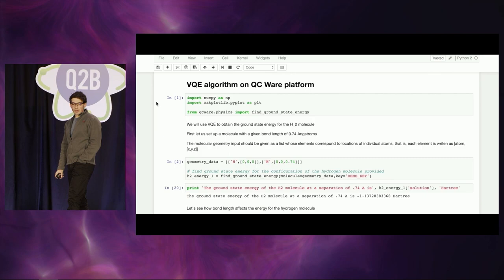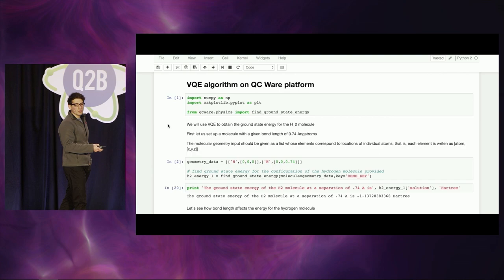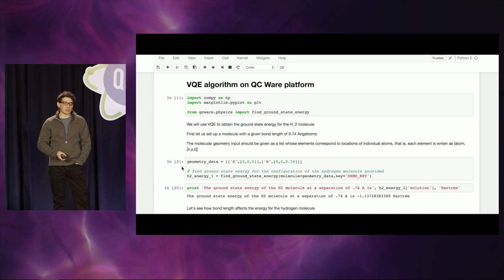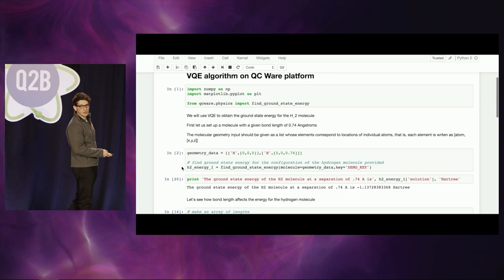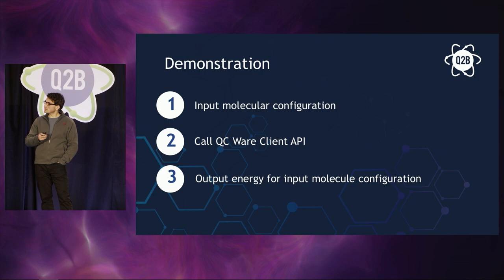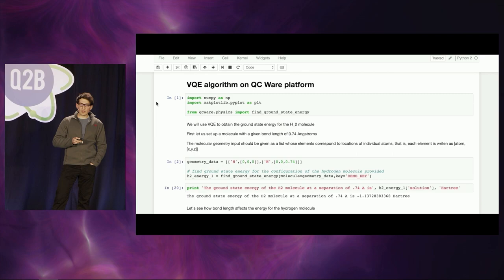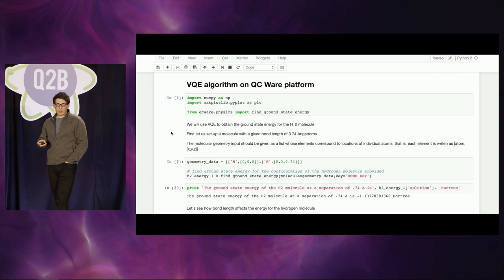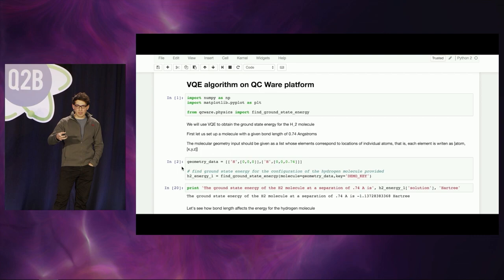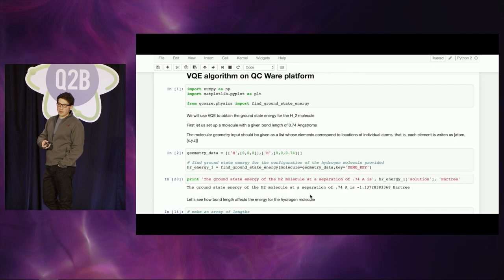In the demo, the first step is to import standard libraries and our physics library, which has the find_ground_state_energy function. The geometry data variable describes a hydrogen molecule with a separation of 0.74 angstroms, oriented along the Z direction. We then run the find_ground_state_energy function. Our algorithm takes care of the mapping, connecting to a quantum computer, parametrizing the guess, and doing the classical update. What it outputs is our estimate for the energy of the hydrogen atom at a separation of 0.74 angstroms.